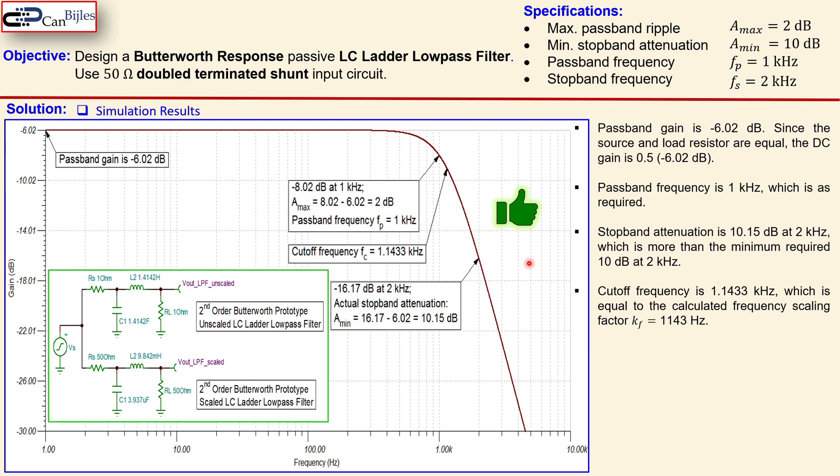This was example number one: the Butterworth response passive LC ladder low pass filter using a double terminated circuit with 50 ohms for both source and load. If you have any questions about this example, please ask and I will try to answer them as soon as possible.